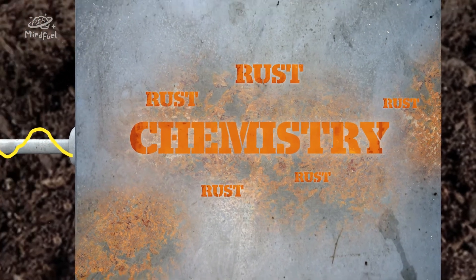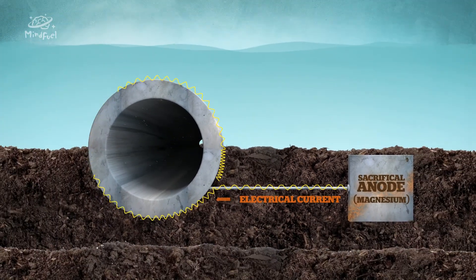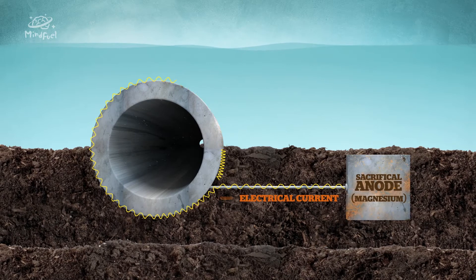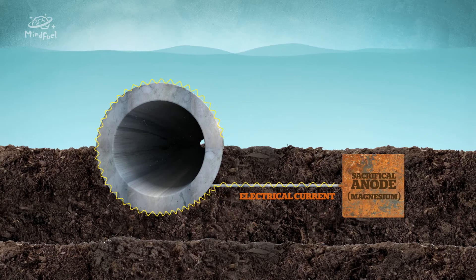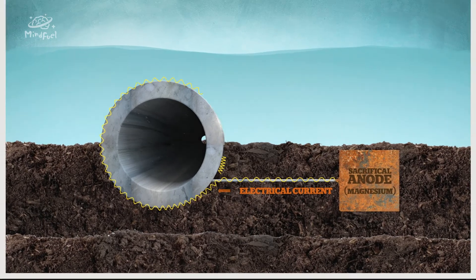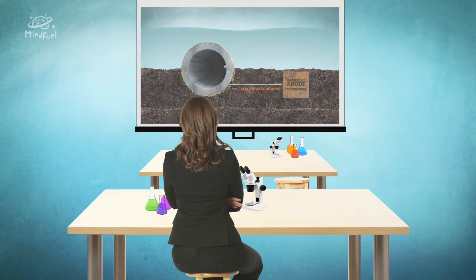By continuously electrifying the pipe in a certain way, we can redirect the corrosion from the pipe to a sacrificial anode, which will corrode in place of the pipe. This will protect the pipeline for decades to come. Wow, I'm glad I paid attention in chemistry class.